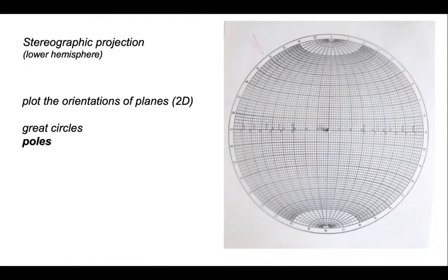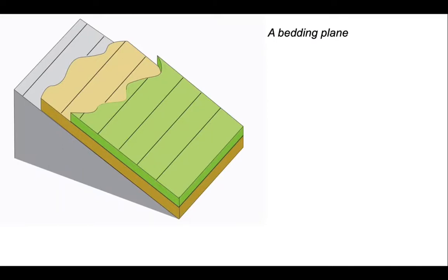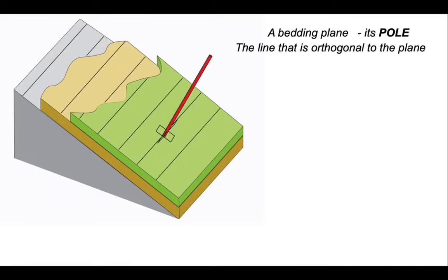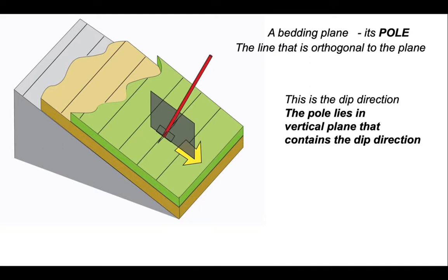Now we're going to move on and look at another way of plotting planes. This time as poles. So what are poles? Well, let's go back to our representation of some bedding planes. The pole is a line that is orthogonal to our particular plane. A single orientation of a bedding plane has a single orientation of a pole. We can relate the pole to the dip direction of our bedding plane. Both of these directions are contained within a single vertical plane. So the pole lies in a vertical plane that contains the dip direction of the bedding plane that we're interested in.